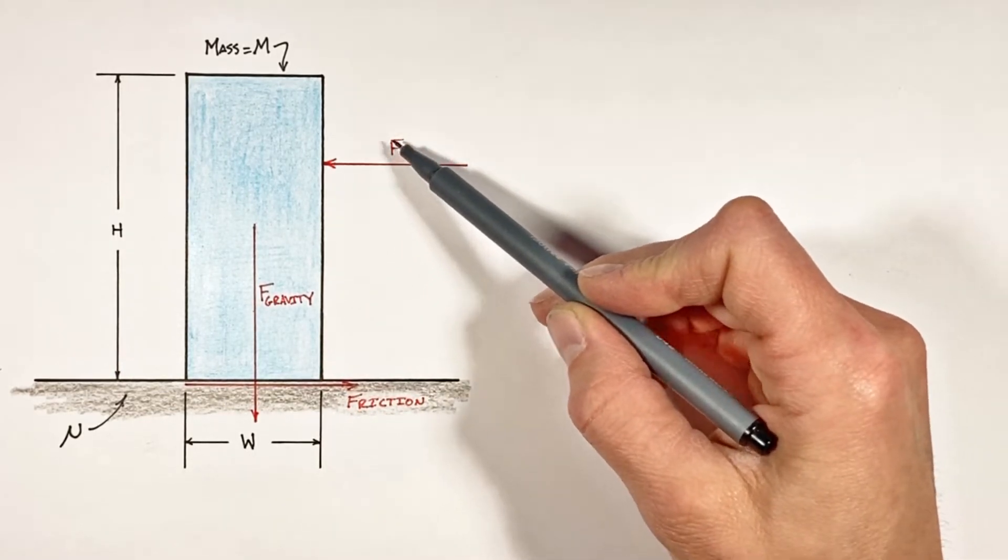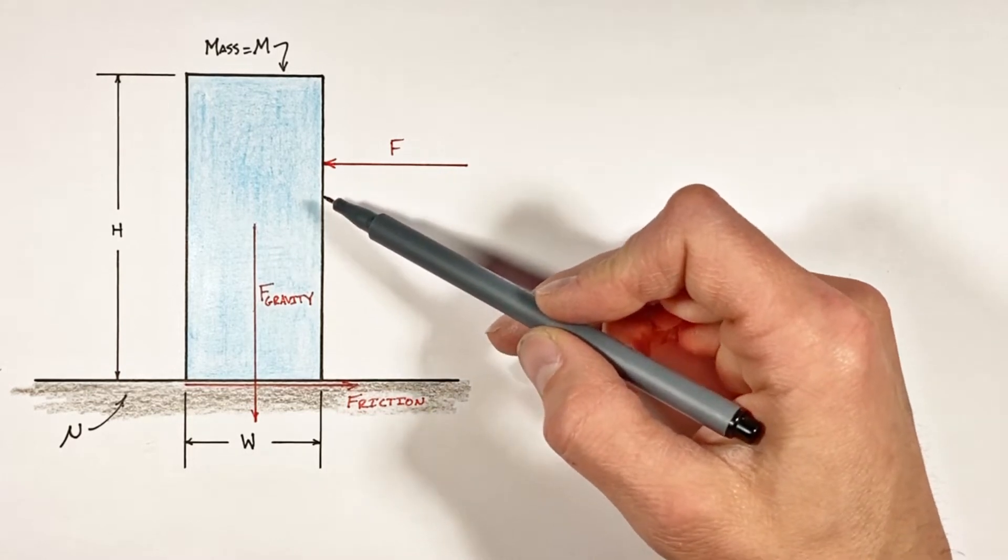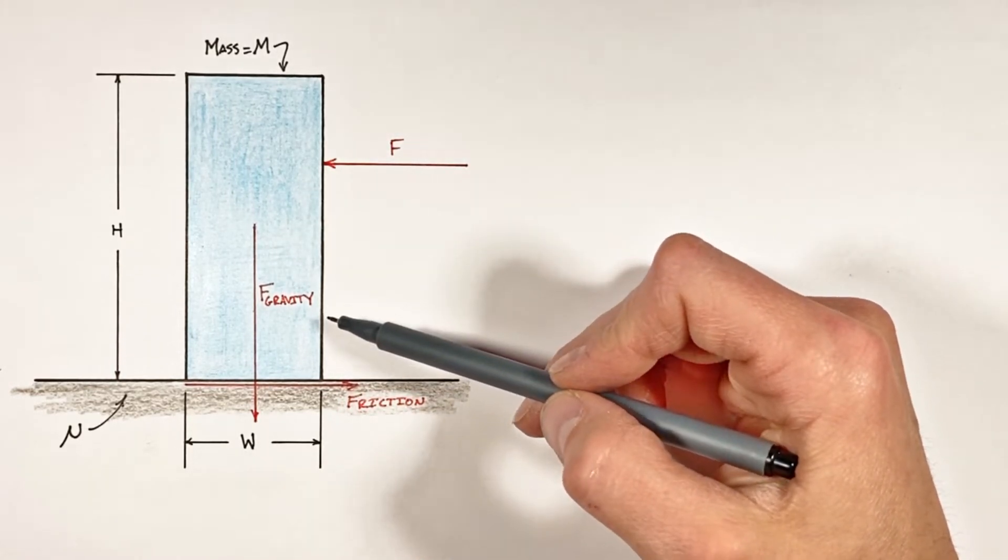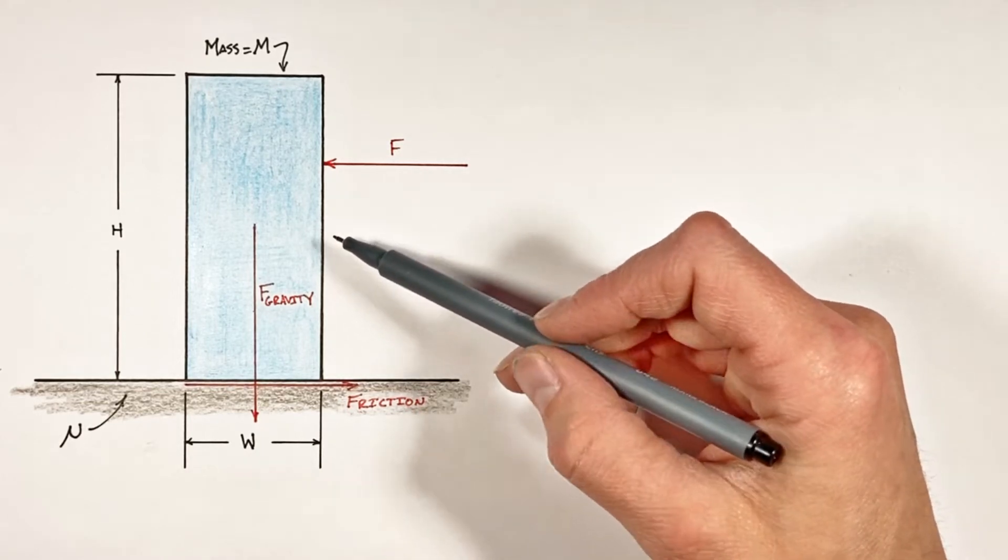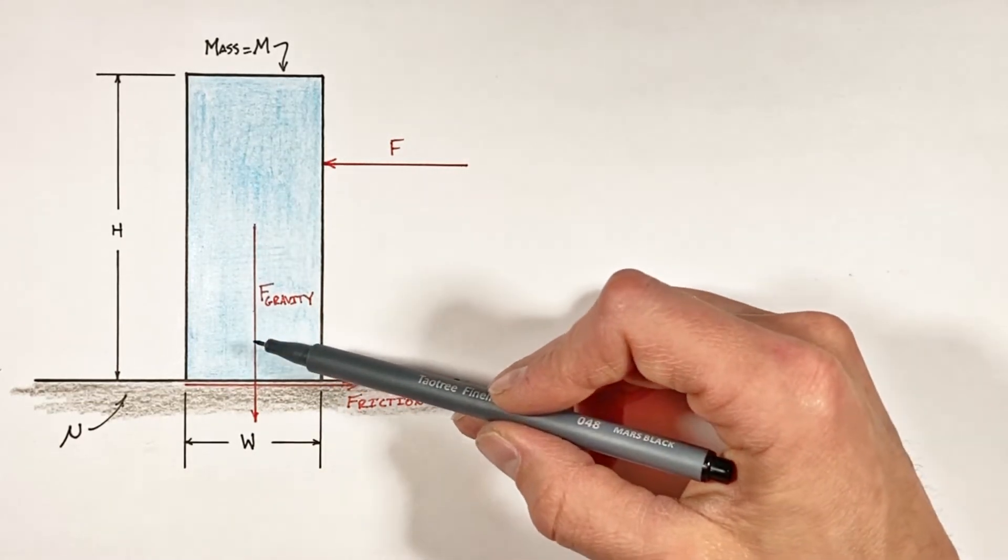But to solve for the height at which this force being applied will cause the block to tip versus slide, I want to set up a set of equations looking at both the conditions for tipping and the conditions for sliding.